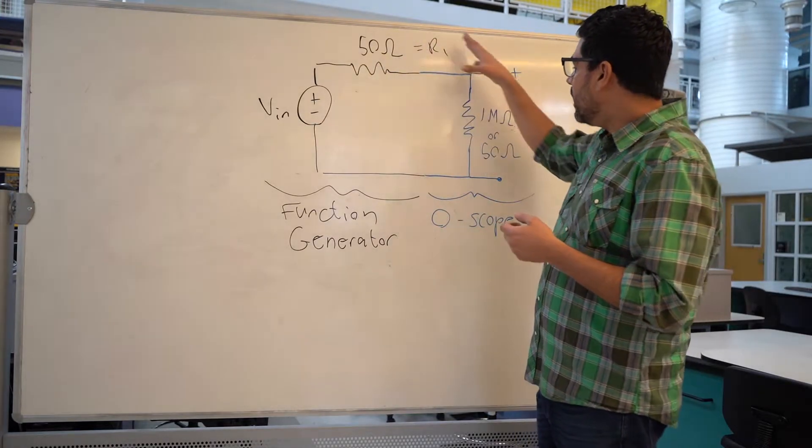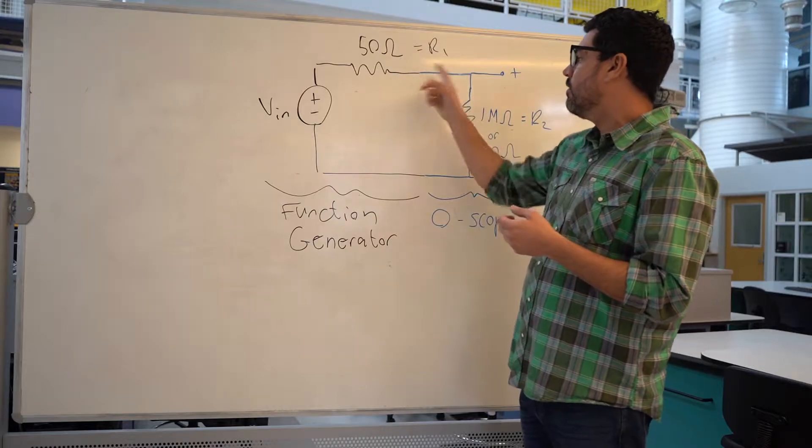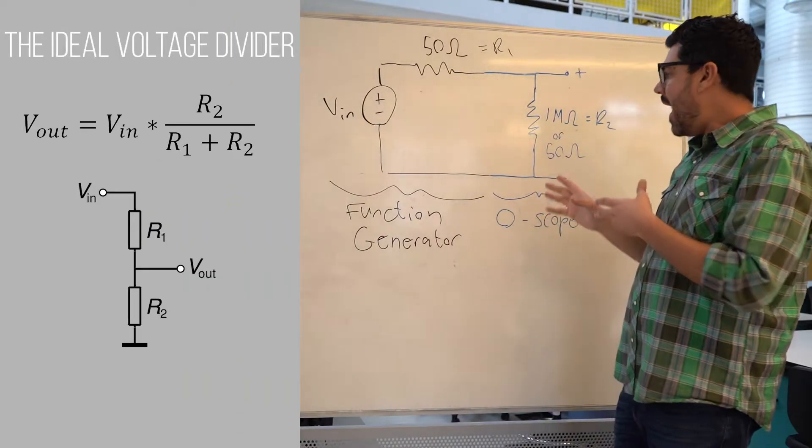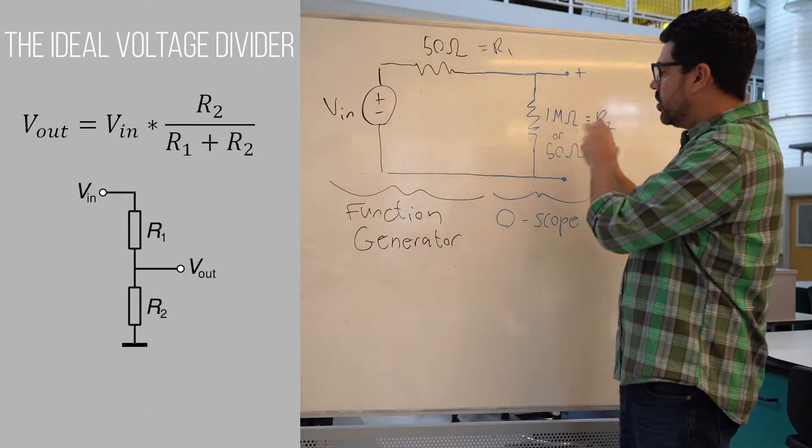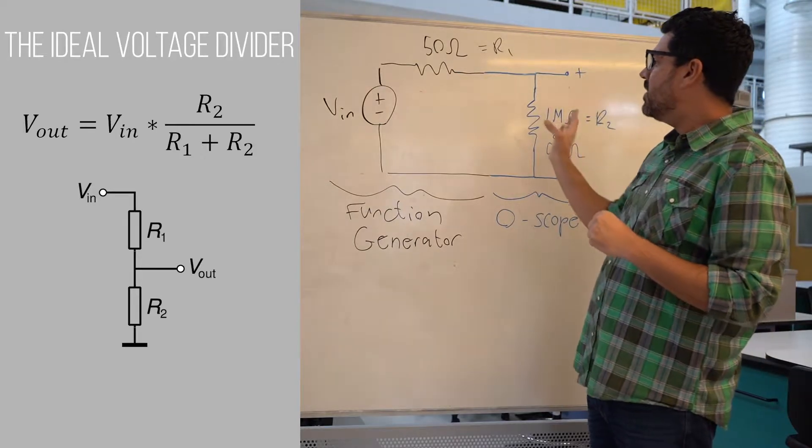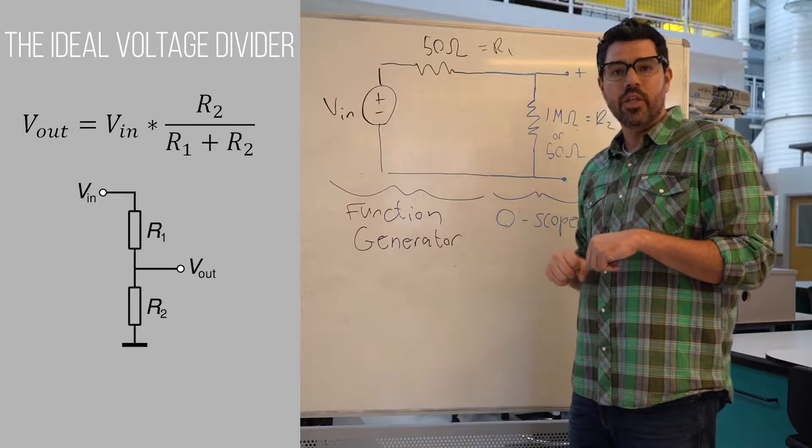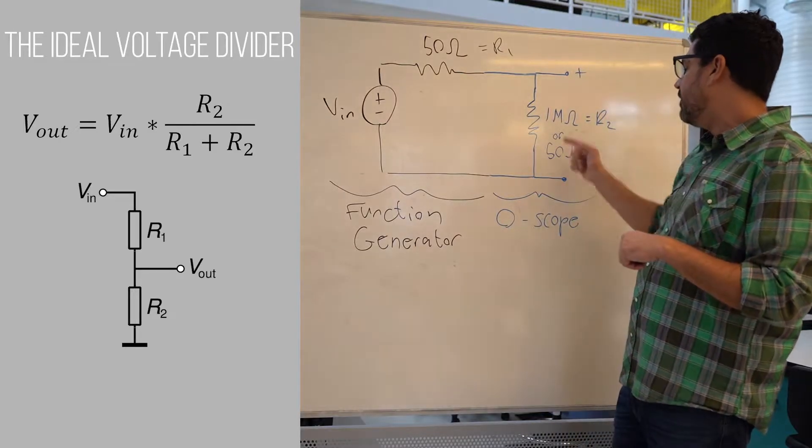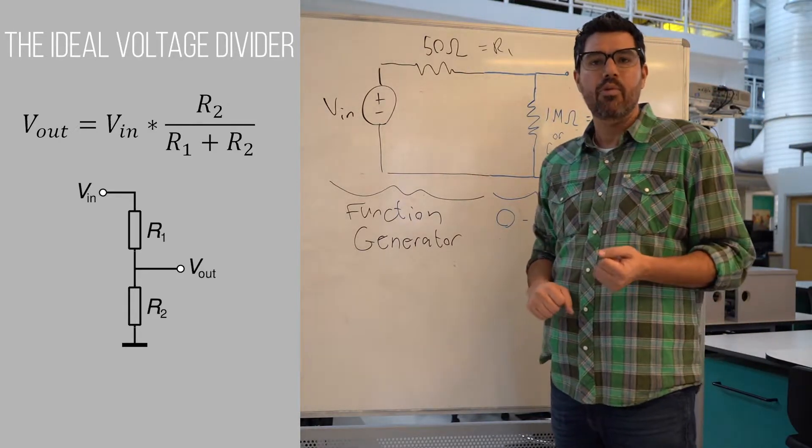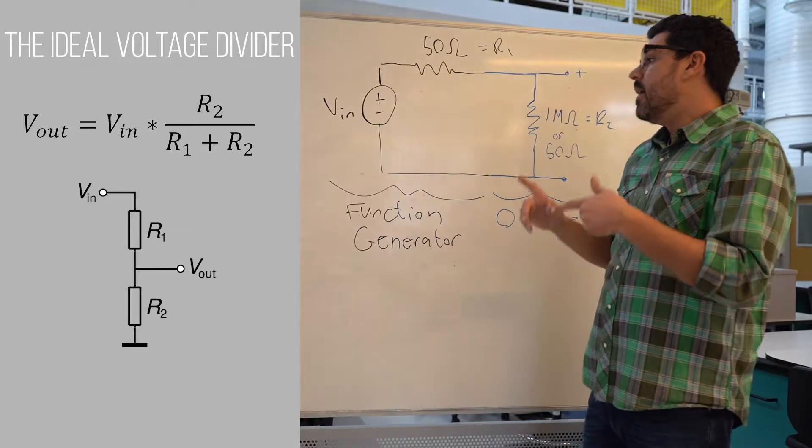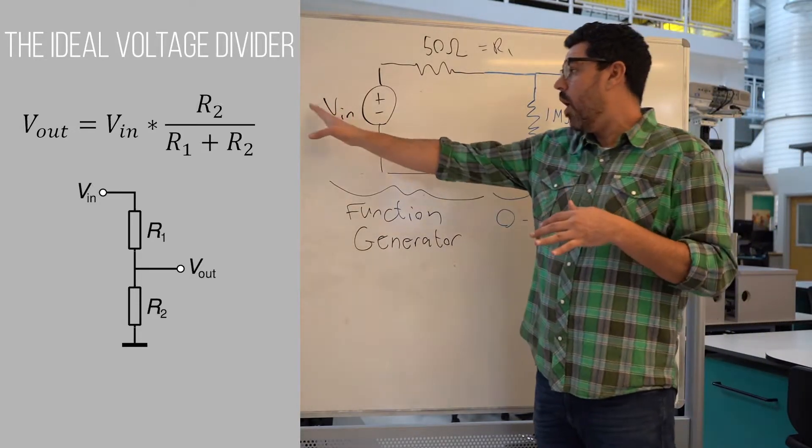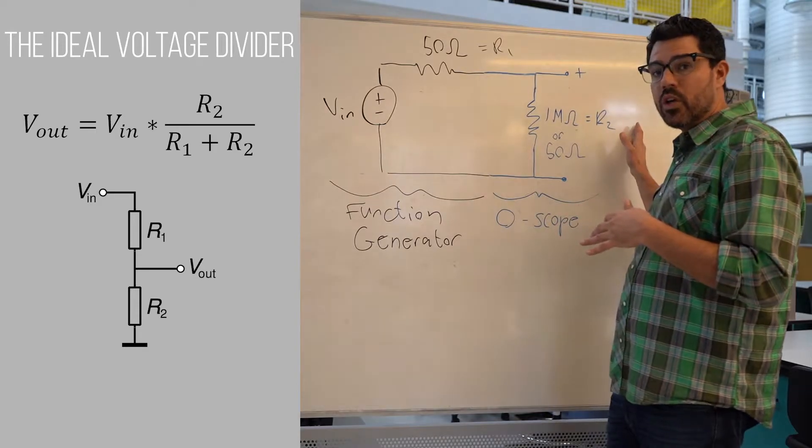Hopefully you can see here that this is a voltage divider. If you're set to 1 mega ohm, then basically you have a 1 to 1. Your voltage out is basically equal to voltage in, because it's 1 mega ohm over 50 ohms plus 1 mega ohm, which is approximately 1. Therefore, 1 volt equals 1 volt to the oscilloscope.